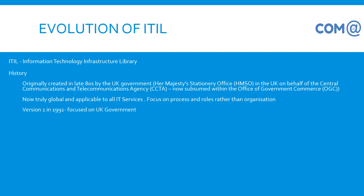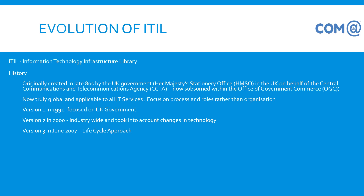The evolution of ITIL basically started in the 1980s for the UK region. They wanted to have certain processes for their own government and formalized it by 1991, focusing on entire UK government agencies. After 10 years, they wanted to implement it worldwide as an industrial standard across all departments in the UK, and other companies in the world also started implementing the process. Based on familiarity gathered from the industry, version 3 was launched in June 2007, covering a lifecycle approach — an end-to-end process for any kind of IT infrastructure.